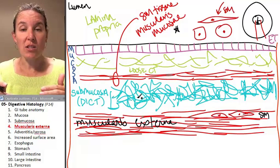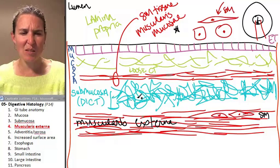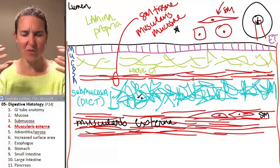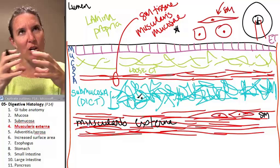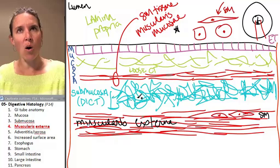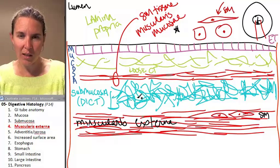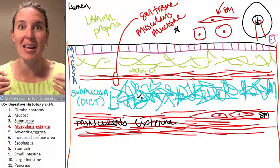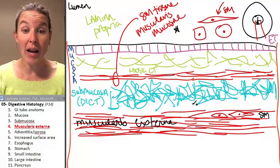In the muscularis externa, because the smooth muscle cells are kind of long, can you imagine that we could put them all in a row? Like we could orient them all in the same direction. And in fact, that's what happens.